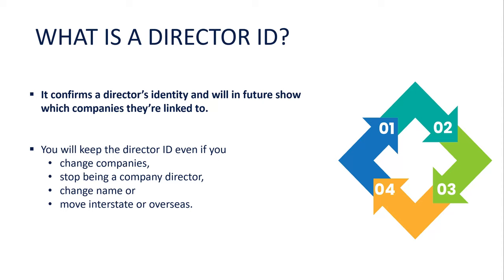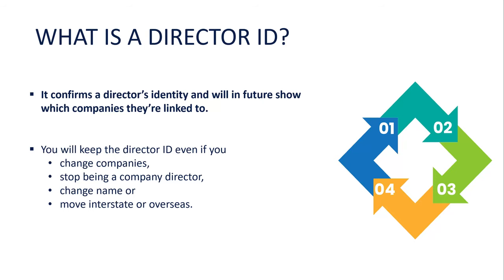You'll need this Director ID to do anything in the future. I sort of get where it's coming from, particularly from ASIC, because a few times I've done a search for a particular client and, for example, there could be a Derek Nolan. You search and there's a number of Derek Nolans who are directors of different companies. You need the date of birth, and there could be different Derek Nolans with the same or different dates of birth. So they decided to move to giving everyone an ID number, a bit like a tax file number, but to use for things besides income tax.